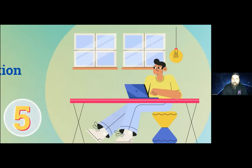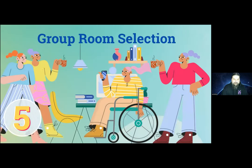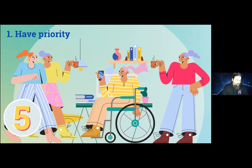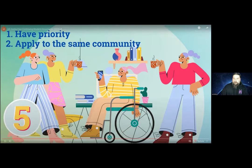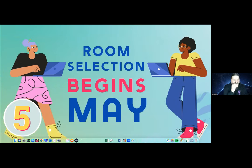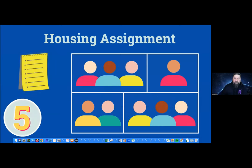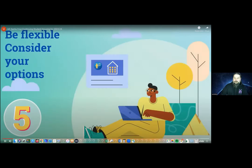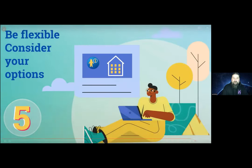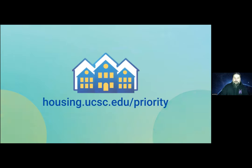Students with priority status will be eligible to participate in room selection, either on your own or as a member of a group. All group members need to have priority status and apply to the same community. Room selection in May is the beginning of the housing assignment process, but it's not the end. Housing coordinators will be working throughout the spring and summer to assign any remaining spaces to students still in need of housing, starting with the priority waitlist. Be flexible — indicating as many room types as you agree to accept in your application will help your chances. To learn more, visit housing.ucsc.edu/priority.